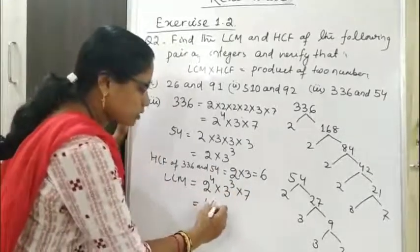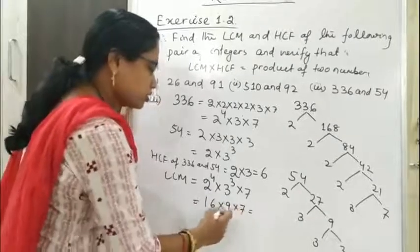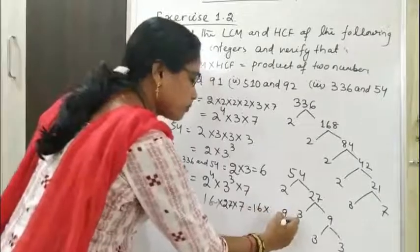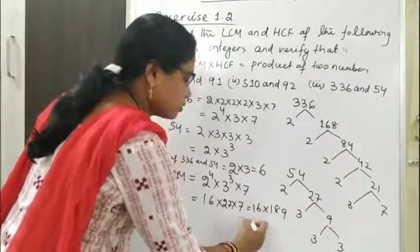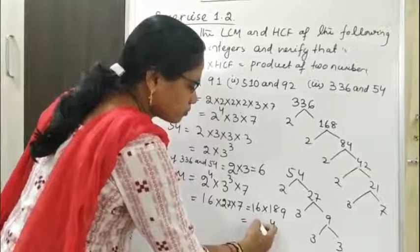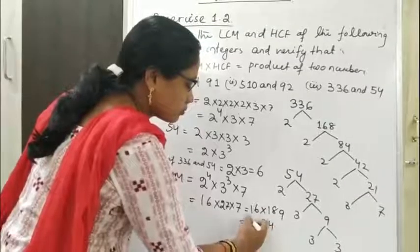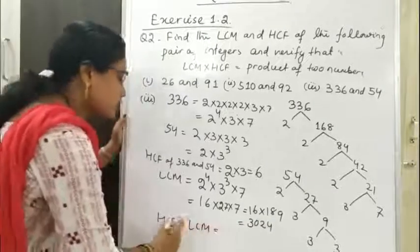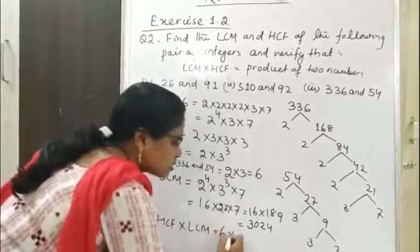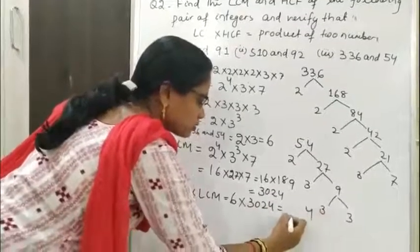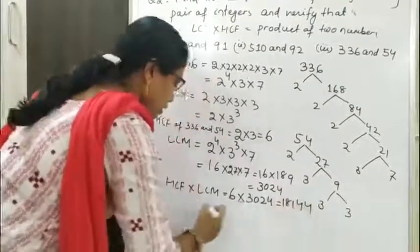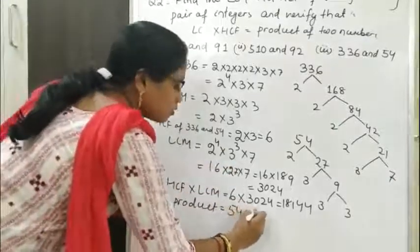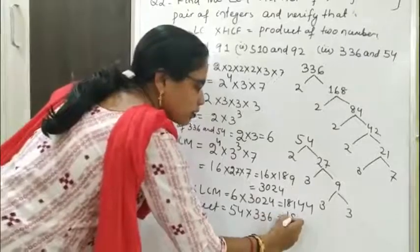LCM = 2⁴ × 3³ × 7 = 16 × 27 × 7 = 3024. So HCF × LCM = 6 × 3024 = 18,144. And the product of the two numbers: 54 × 336 = 18,144. So this is verified.